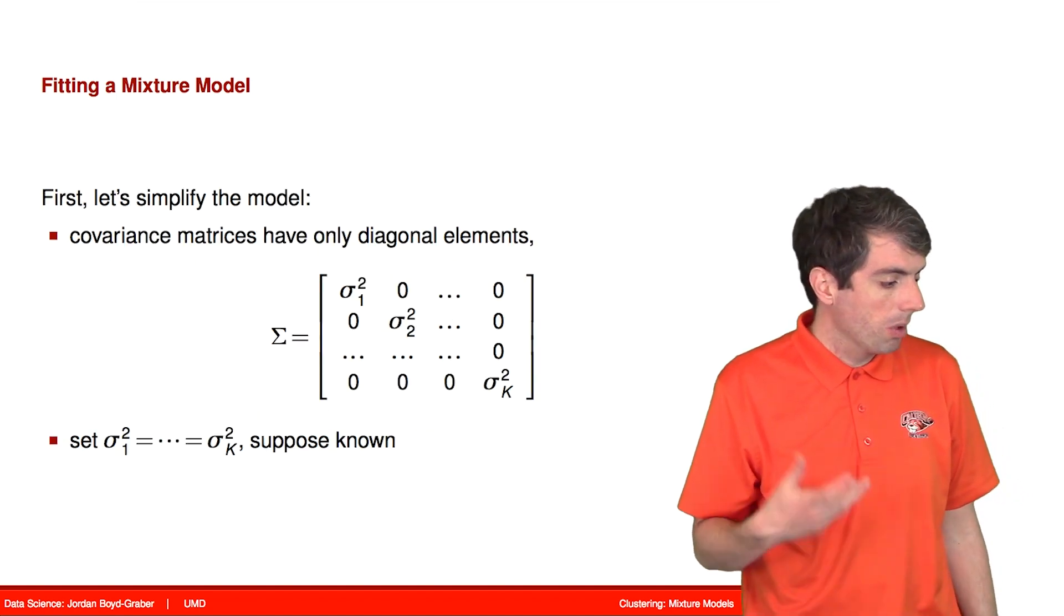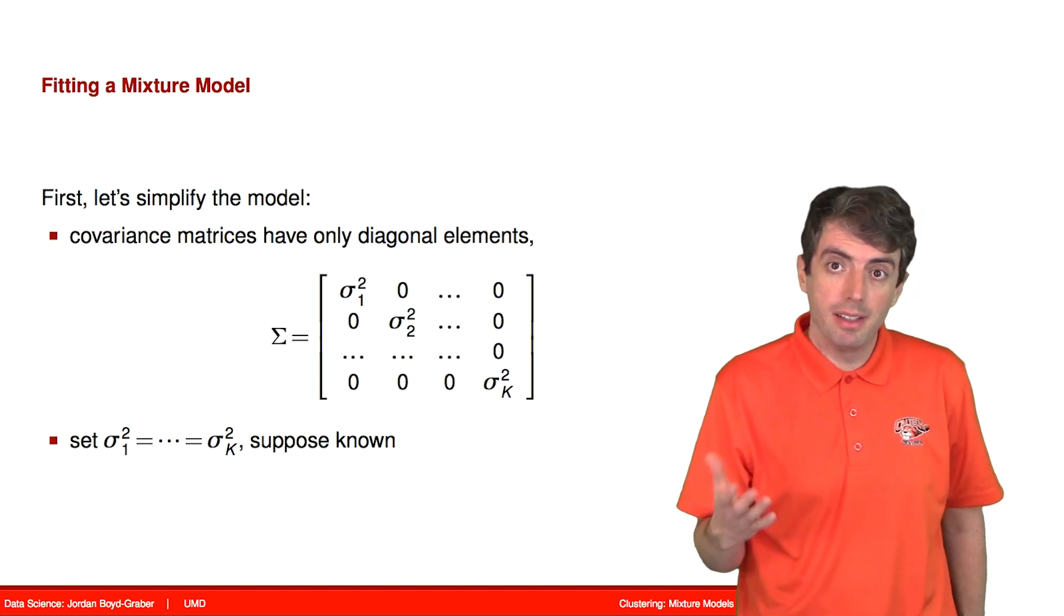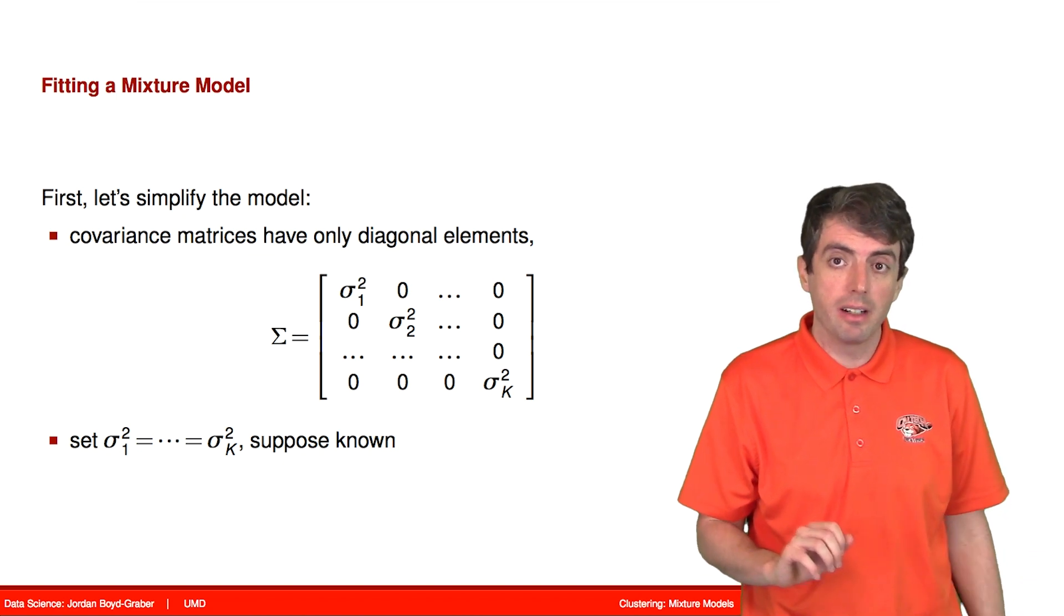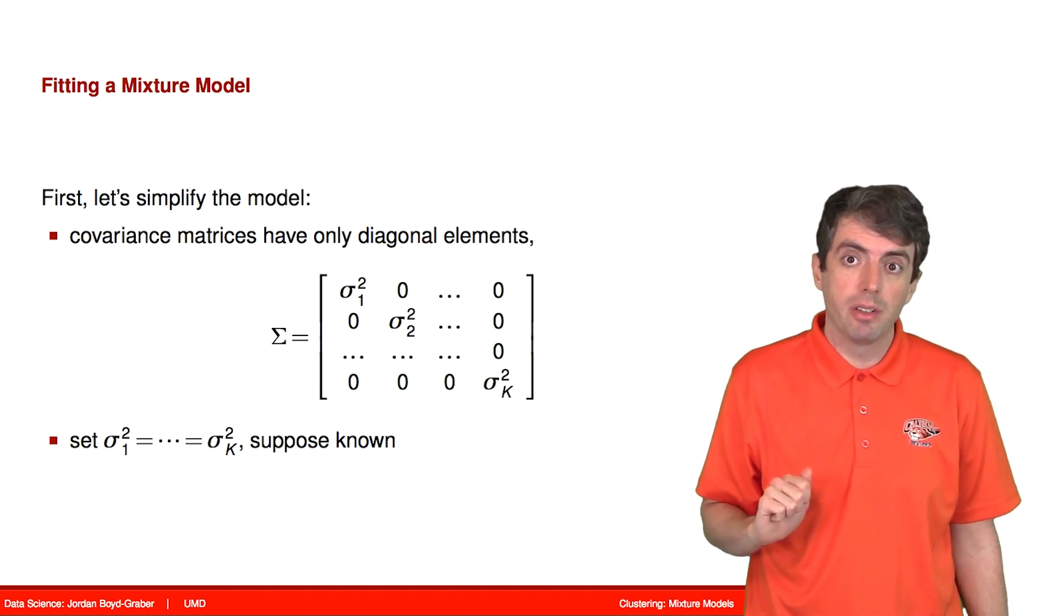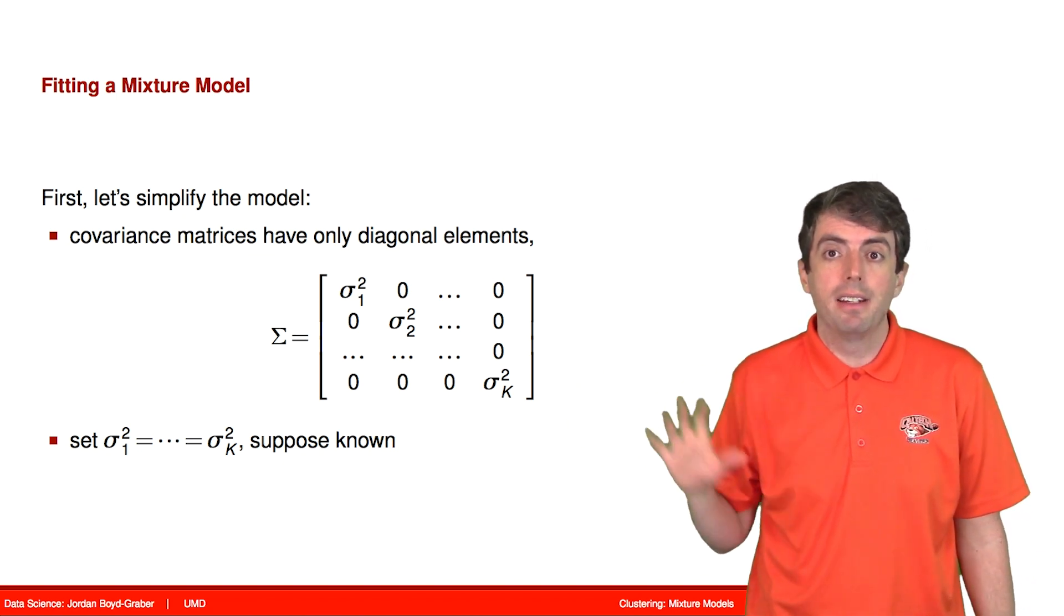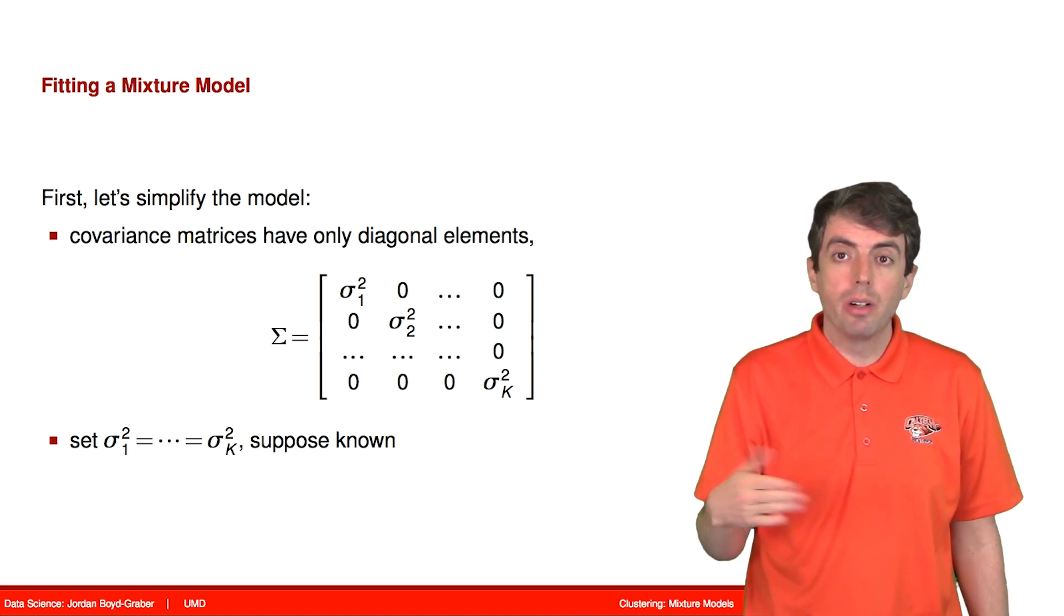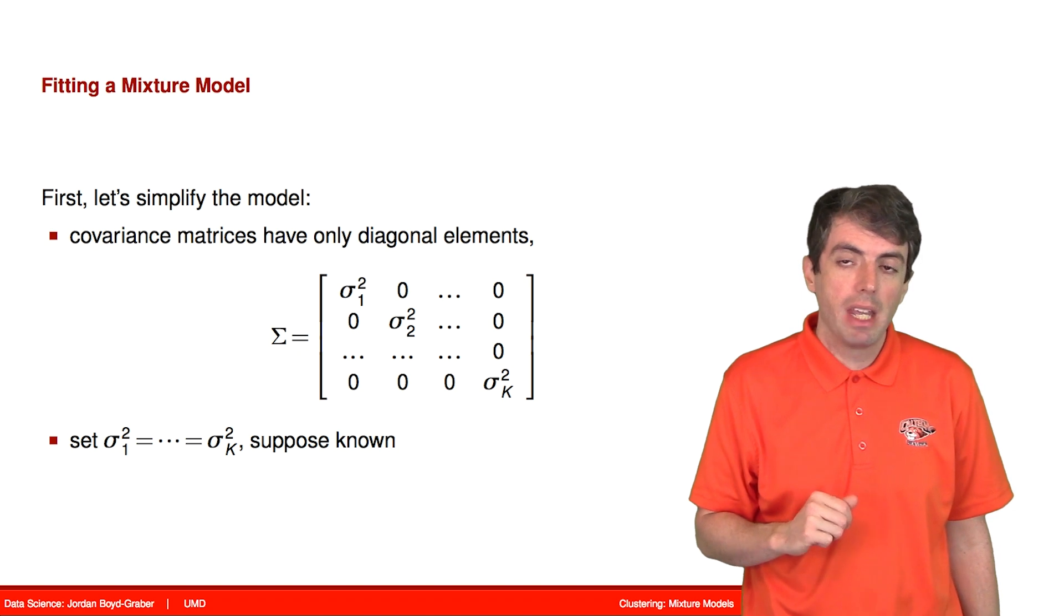To do that, we're going to simplify the model a little bit. Just to make it easier to explain what's going on, we'll relax these assumptions a little bit later. This makes it actually very similar to k-means, and once we figure out how to do it with a simple model, we'll go into the more complicated versions. So first, let's assume that we just have a variance matrix that is diagonal.